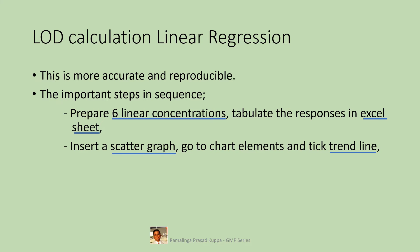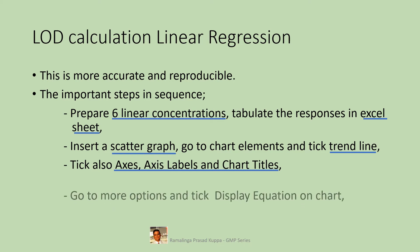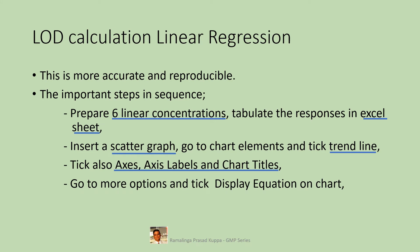Go to chart elements — some Excel versions have a separate tab for this, while others have a plus mark beside the graph. Select the linear option for simple linear regression, then tick the trend line. Select axis labels and chart titles so the graph has all data displayed. Go to More Options and click 'Display Equation on Chart.' You will see the data displayed on screen with slope and intercept — note the slope value.